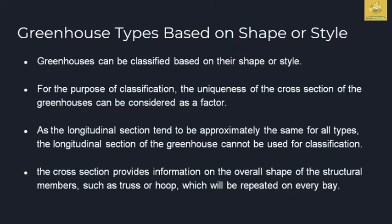For structural factors, you can use wood, timber, plastics, iron, and steel sections. In the classifications, you can use longitudinal sections. The overall shape is described by cross-sectional area — a trough shape and a hoop shape. These describe the greenhouse shape and style.